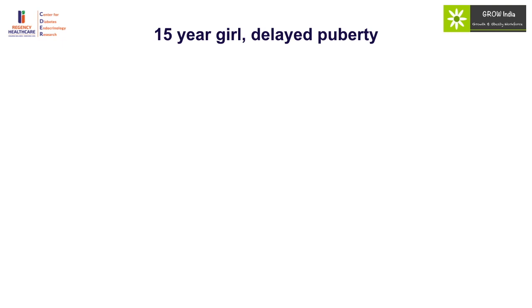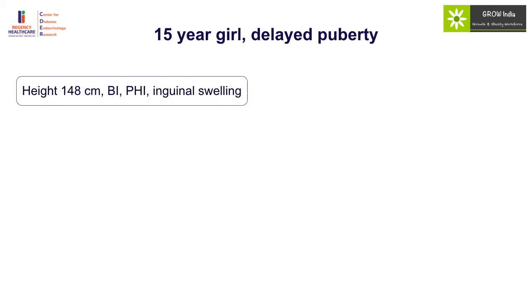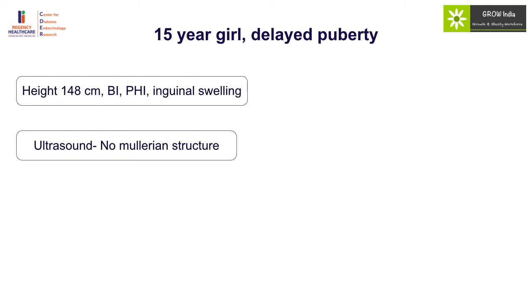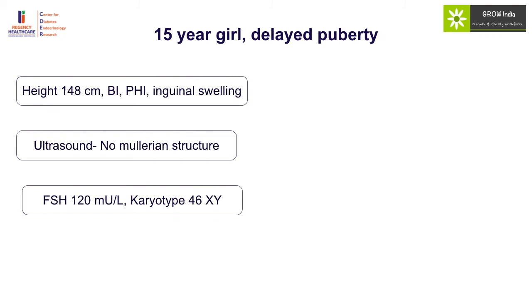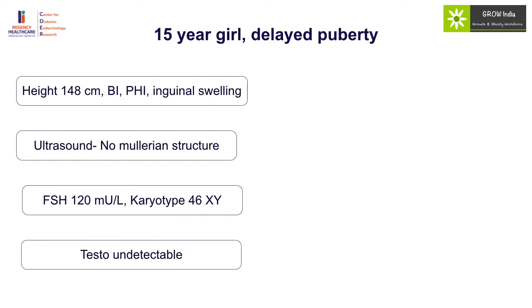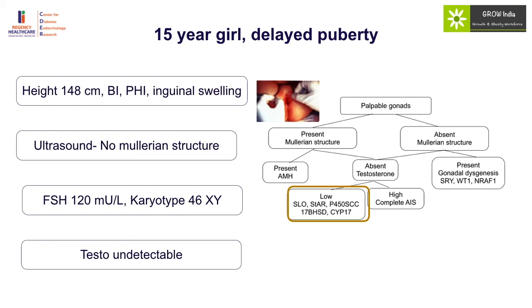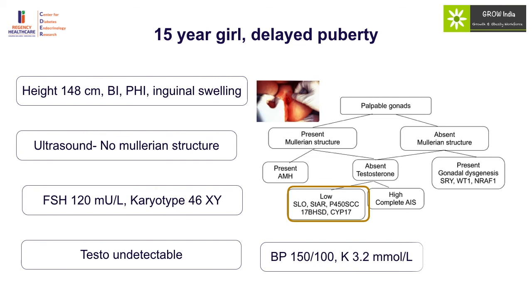A 15-year-old girl with delayed puberty, height 148 cm, breast stage 1, pubic hair stage 1, with inguinal swelling — mostly inguinal gonads. Ultrasound shows no Müllerian structures. FSH is high and karyotype is XY — clearly XY DSD. Testosterone is undetectable. She has palpable gonads, absent Müllerian structures, and low testosterone — indicating a steroidogenic defect. On assessment, blood pressure was high with hypokalemia, confirming a diagnosis of CYP17 defect.